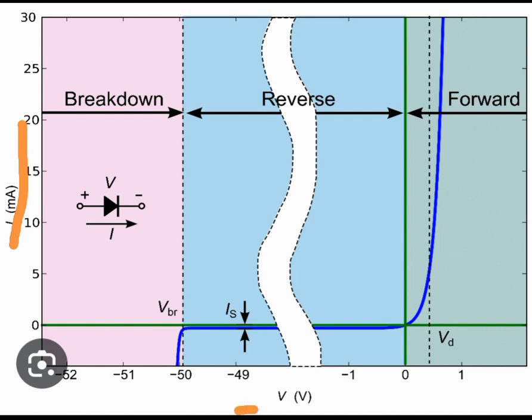There are basically three regions of operation for a PN junction diode. One is called forward bias, second is reverse bias, and third is breakdown mode.